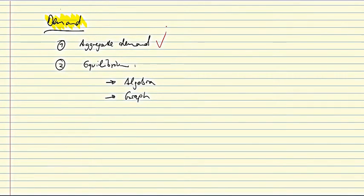And then we'll look at what is an equilibrium in the goods market. And we'll do that in two steps, both in algebra and in terms of a graph. So let's jump right into it and look at total demand, aggregate demand.